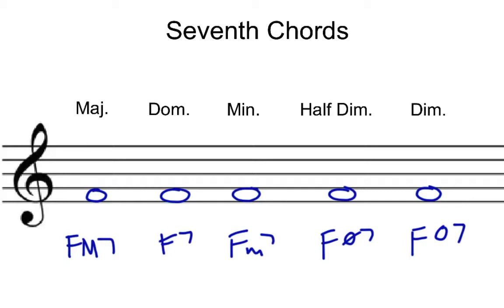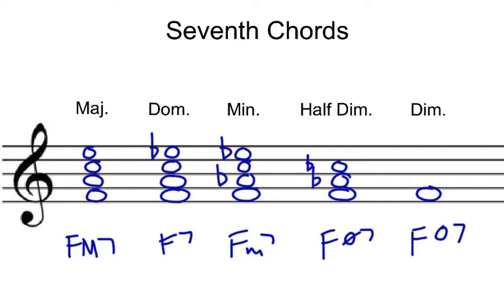The F major 7 would have a major triad and then a major 7. The F dominant 7 would also be a major triad but with a minor 7 on top. The F minor 7 would have a minor triad and a minor 7 on top. The half diminished 7 would have a diminished triad and then a minor 7 on top. And the fully diminished 7 would have a diminished triad but also a diminished 7 on top. Hope you did well.